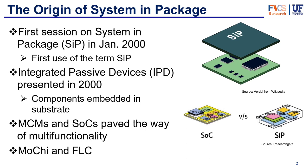Also in the year 2000, there had been some research done on embedded passive components, known as IPD or Integrated Passive Devices, and this helped pave the way for what SIP would do later on — integrating active and passive devices under the same substrate. There was also prior technology like MCMs or multi-chip modules, and SOCs or system on chips, which started multi-functionality as an idea. MCMs used a common substrate and tried to put different chips together, similar to what SIP would do later on.